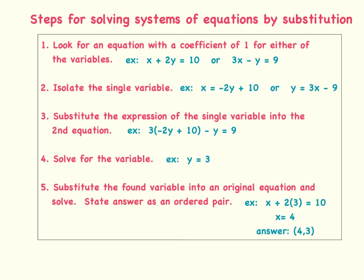Now before we move to the third step, I want to talk about what if you do not have any equations where the coefficient is 1. If that is the case, then you would just pick the variable that you want to isolate and solve for that variable. Now let's move on to step three, which is to substitute the expression of the single variable into the second equation.